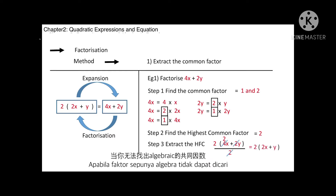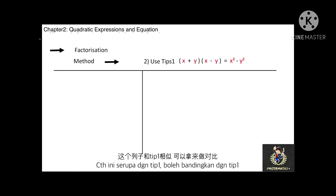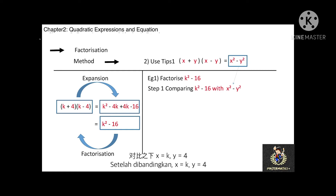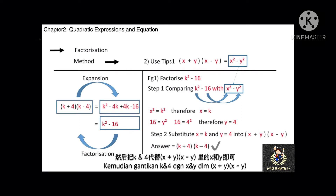For factorization using tips, we use Tips 1, Tips 2, or Tips 3 when we are unable to find the highest common factor. Using Tips 1 — (x plus y)(x minus y) equals x squared minus y squared — to factorize k squared minus 16: we compare with x squared minus y squared, finding x equals k and y equals 4 (since 16 equals 4 squared). Substituting gives the factorization: (k plus 4)(k minus 4).